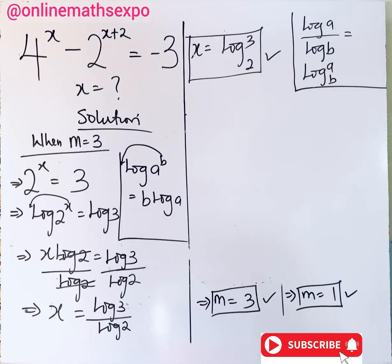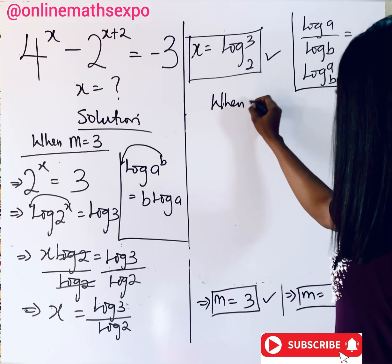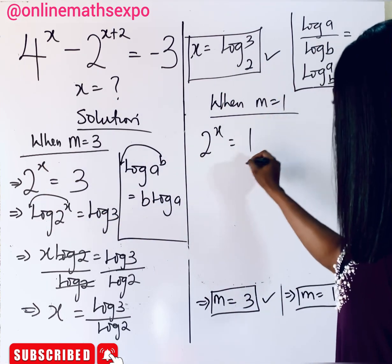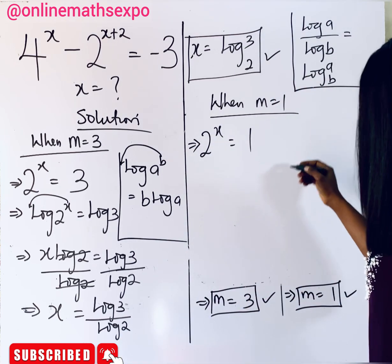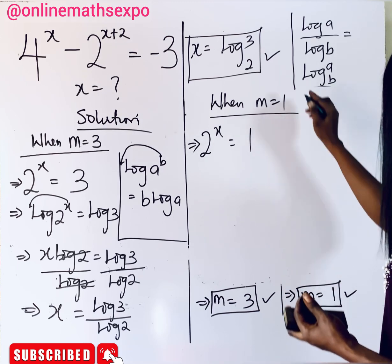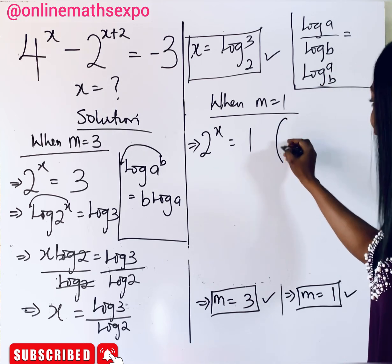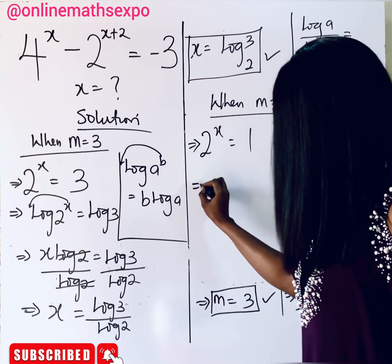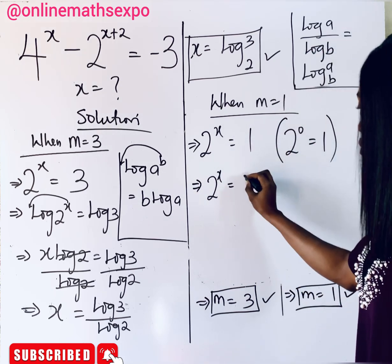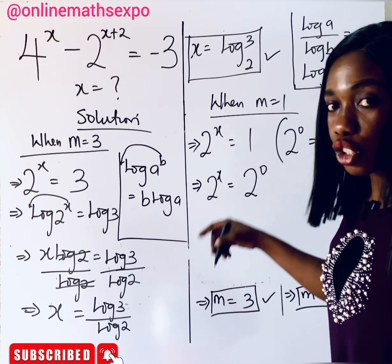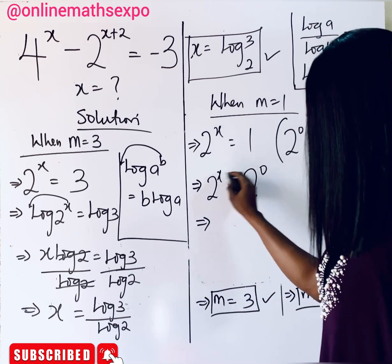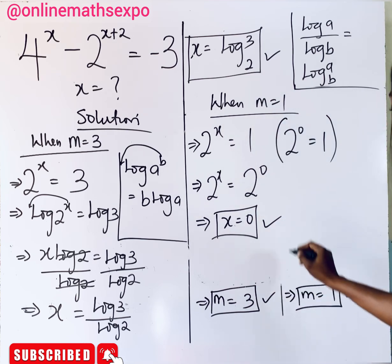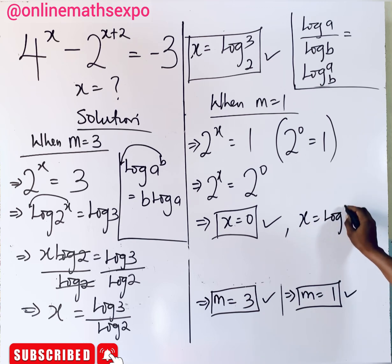Now let's check for when m equals 1. We have 2 to the power of x equals 1. Recall from indices that any number raised to the power of 0 equals 1, so we can write 1 as 2 to the power of 0. Now both sides have base 2, so the powers must be equal, giving us x equals 0. So when m equals 1, x equals 0, and when m equals 3, x equals log base 2 of 3.